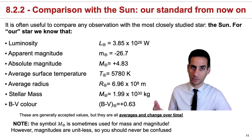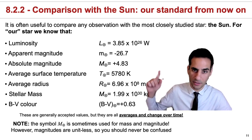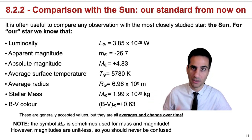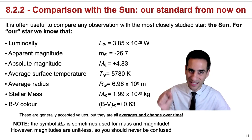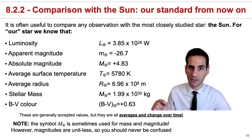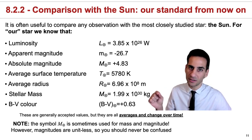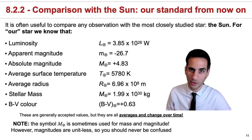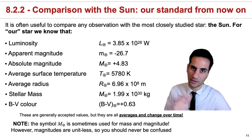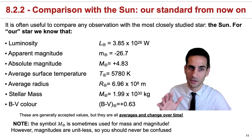Another important thing to point out is that all these are actually average quantities, because they change slightly with time. The sun is not producing exactly the same luminosity at all times, and it can also change its color a little. It can actually go through cycles where there are a lot of sunspots and the sun is slightly darker, versus when there are no spots at all.